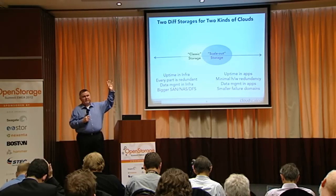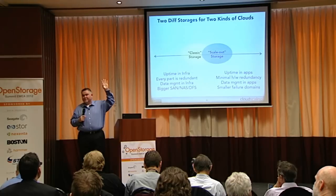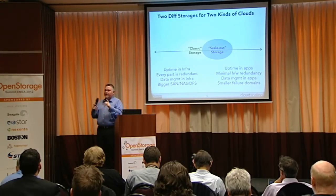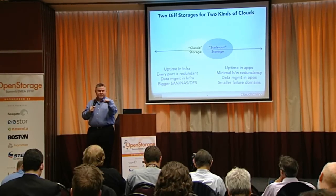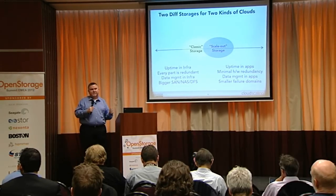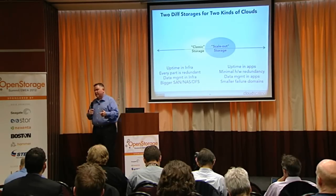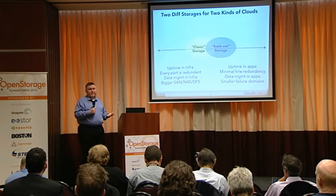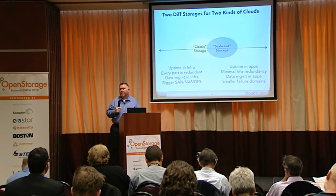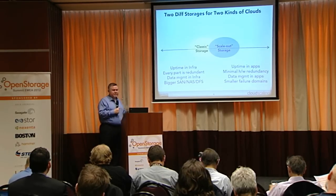Google has racks of servers that are basically a motherboard on a piece of cardboard jammed into a rack, with a couple of disk drives — their de facto standard for compute. No redundant power supplies, no redundant networking — very minimal. That's part of the reason their cost structure is so low. Part of the reason they can do that is that the app itself — the software running on top of this commodity hardware — is handling all the redundancy. The redundancy is not in the hardware; it's in the app.